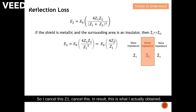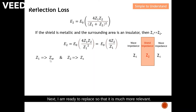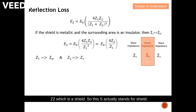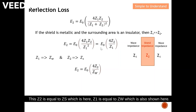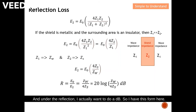With a common factor of Z1 canceling, I replace Z1 with ZW (wave impedance) and Z2 with ZS (shield impedance). So this equation uses ZS and ZW. Under reflection, this is the characteristic of E0 over E2 — shifting E2 and rearranging gives us the reflection expression, and converting to dB yields this form.